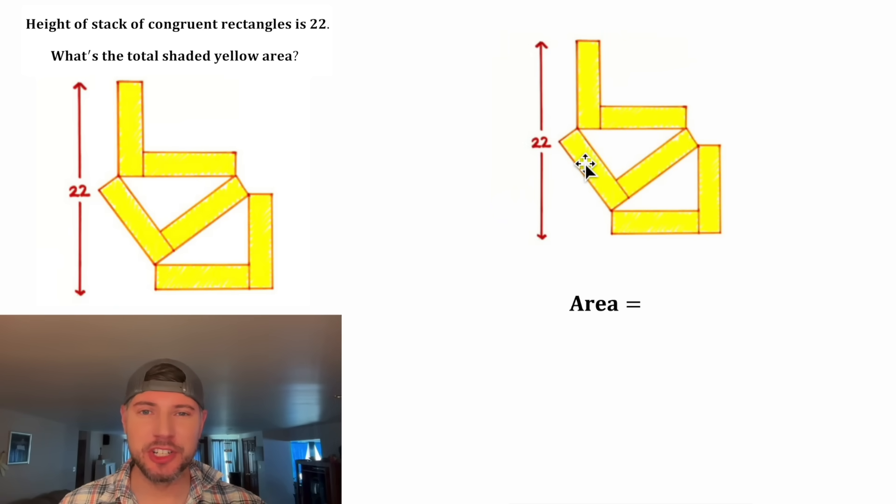So first let's write a formula for the shaded yellow area. If we call the little side of the rectangles X and the longer side H, each rectangle has an area of XH. So the area we're trying to find is 6XH. This looks important, let's put a box around it.